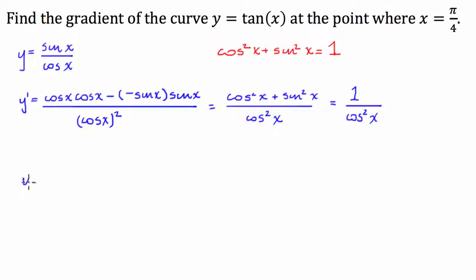So we're going to have 1 divided by cos squared of pi over 4. Now we know that cos of pi over 4 is 1 over root 2. So let's just write this on the side here.